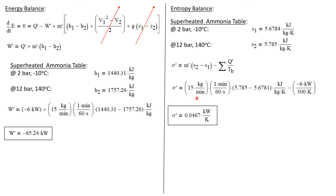The rate of entropy production equals the mass flow rate of 15 kilograms per minute — converting minutes to seconds — times the specific entropy at state 2 minus the specific entropy at state 1, using our table values. Then we subtract Q dot over T, the temperature at which the heat transfer takes place. Q dot is minus 6 kilowatts and the boundary temperature is 300 degrees Kelvin. This gives us a rate of entropy production of 0.0467 kilowatts per degree Kelvin, which is a positive number, as it must be for this process to take place.